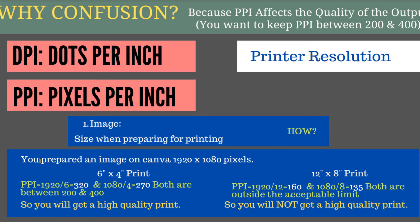Let me explain PPI with an example. Say you prepared an image in Canva at 1920 by 1080 pixels, and you want to print it on a card that is 6 inches by 4 inches. The PPI in the width would be 1920 divided by 6, which is 320 pixels per inch. In the height, it would be 1080 divided by 4, which is 270 pixels per inch. Both 320 and 270 are greater than 200 and less than 400, so both values are within the acceptable range, and we will get a high-quality print.